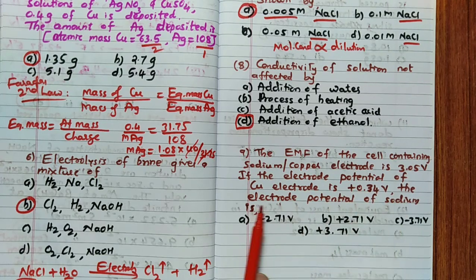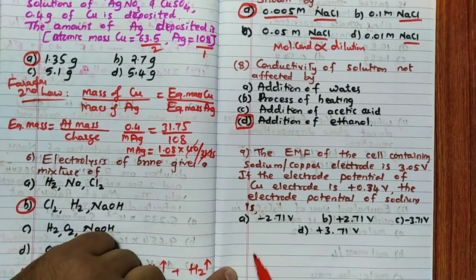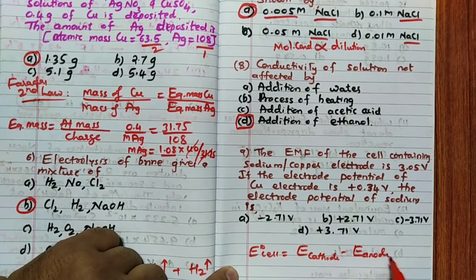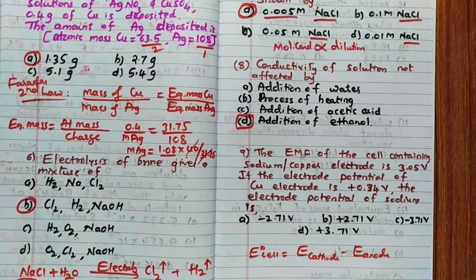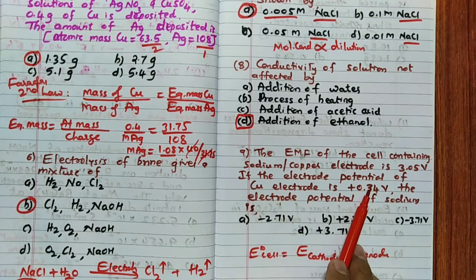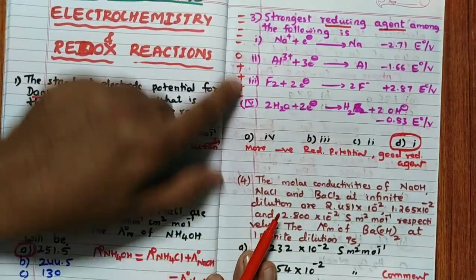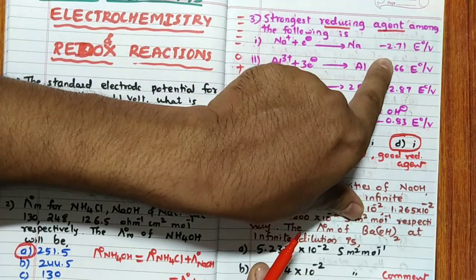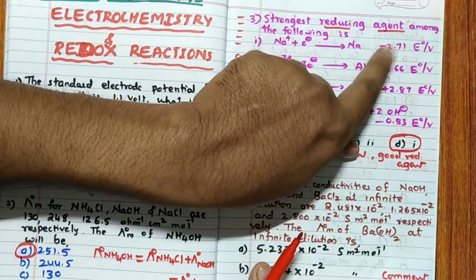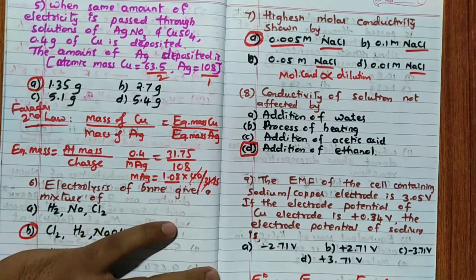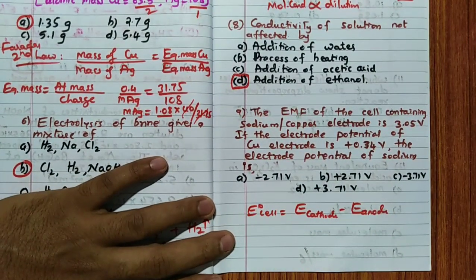The ninth question: the EMF of a cell containing sodium and copper electrodes is 3.05 V. The electrode potential of Cu is 0.34 V. Find the electrode potential of sodium. Using E°cell = E°cathode - E°anode, and knowing copper is the cathode (more positive), two positive options can be eliminated immediately. The answer must be negative.